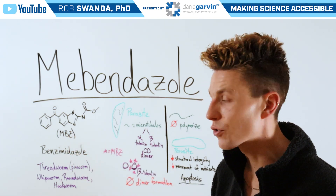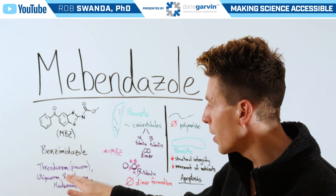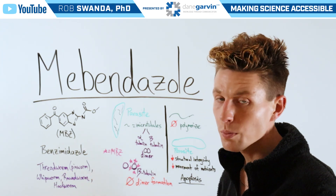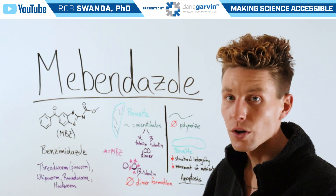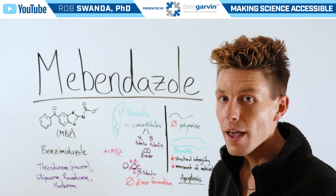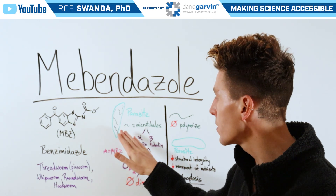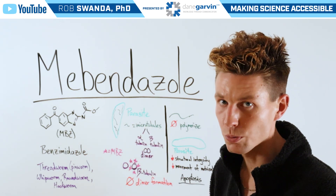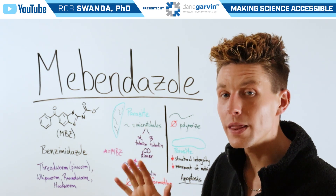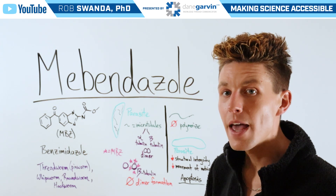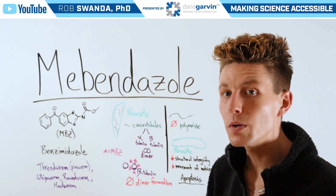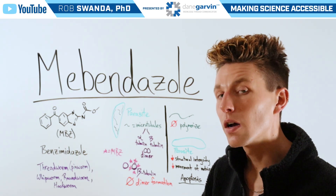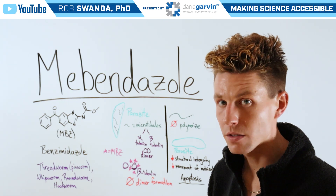This is used for the treatment of thread worm or pin worm, whip worm, round worm, and hook worm. It exerts its effects on those parasites and specifically their microtubules — you may be familiar with this mechanism as microtubules were also the target of another drug we broke down called fenbendazole.